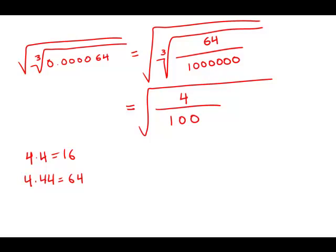So that's just 4 over 100. Well, now when we take the square root of this, the square root of 4 is 2, the square root of 100 is 10.